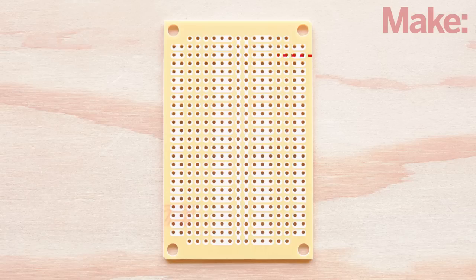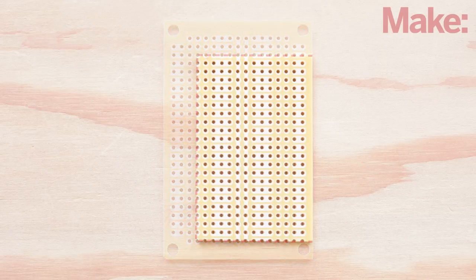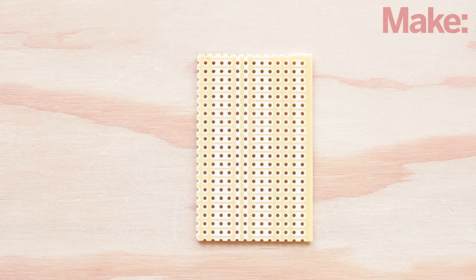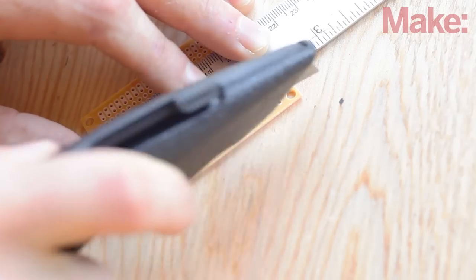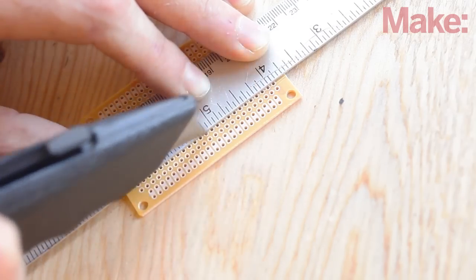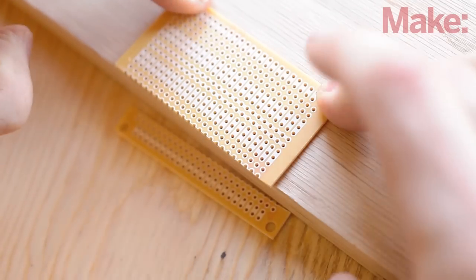Let's start by cutting down the perf board to size. The PCB pattern is not symmetrical, so be sure you're removing the correct side of the board. Double check before you cut. Score the board using a straight edge and utility knife, then snap it away from the score line along a table edge.